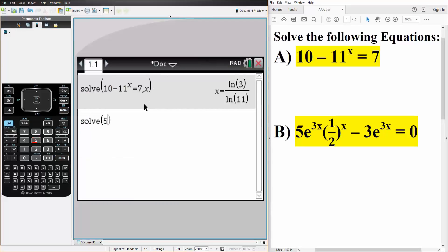we have 5 times e, this e right here, raised to 3 times x times, we have 1 divided by 2, and this is raised to x,